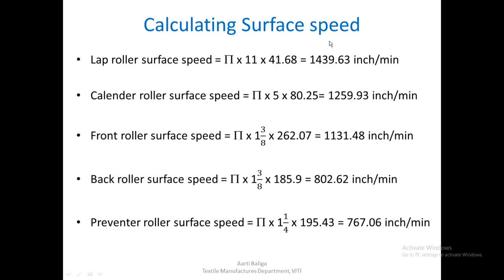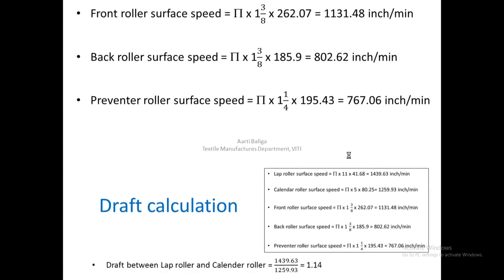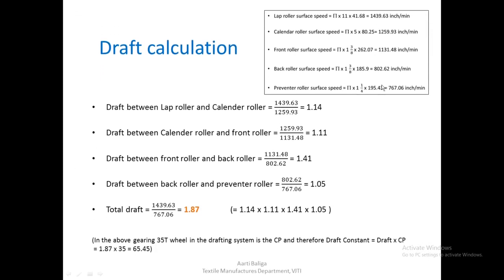For calculating surface speed, we use the formula π × d × n. If we know the diameters of all parts and their RPM, we can calculate the surface speed in inches per minute. Once we have surface speed, we calculate the draft between each pair of parts by dividing the surface speed of the delivery roller by that of the feed roller.